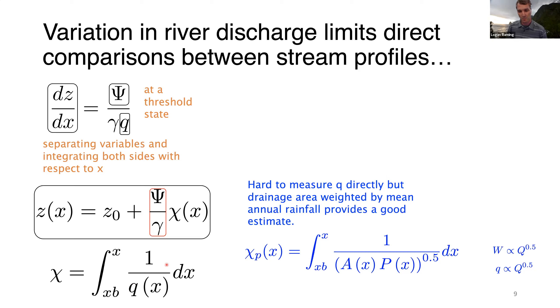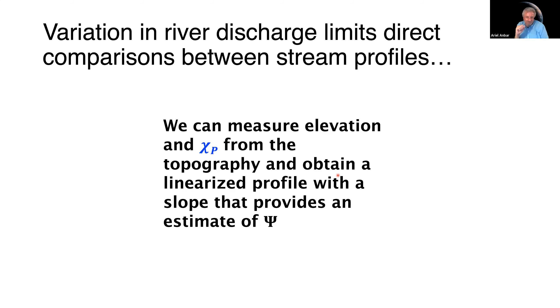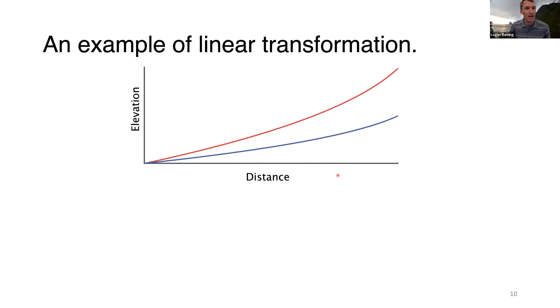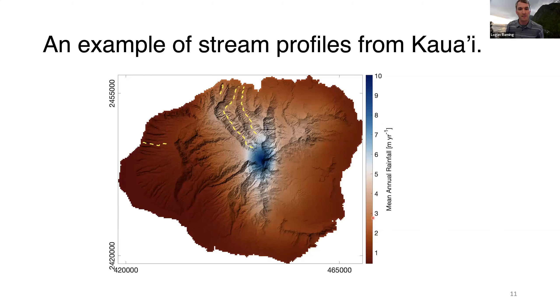We're plotting against this chi term, which is the inverse unit discharge integrated from the outlet of the stream to any point along the stream. It's hard to measure q directly, but we can approximate chi as drainage area weighted by mean annual rainfall. We use chi p, which is drainage area as a function of distance times rainfall raised to the one half. We can measure elevation and chi p from topography and obtain a linearized profile with a slope that provides an estimate of threshold stream power. Here's an example showing two stream profiles that are concave up in normal space, but once we apply the transformation, they become linear and we can infer threshold stream power from the slope.